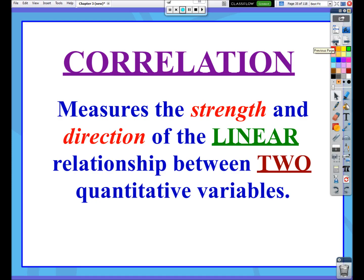So here's the definition of correlation. It measures the strength, which is the main thing we're going to use it for, but it also technically measures direction of the linear relationship between two quantitative variables.